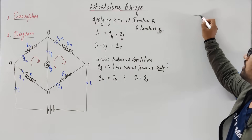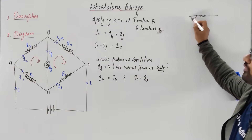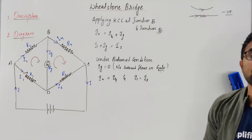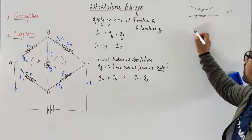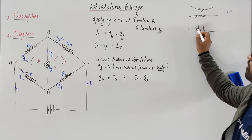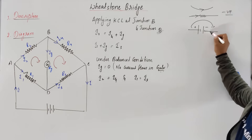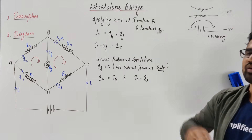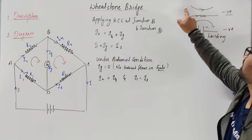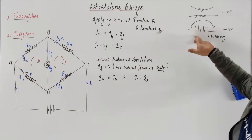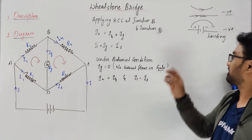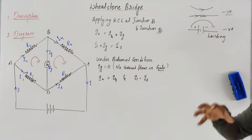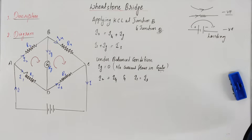Sign convention: for a resistor, if the current is flowing in the same direction as you are walking, it is negative. So for a resistor — same direction, negative; opposite direction, positive. For a battery, whenever you go from positive to negative terminal, it's one sign; if you go from negative to positive, it's the other. Remember: resistor — same direction as current, negative; opposite direction, positive.